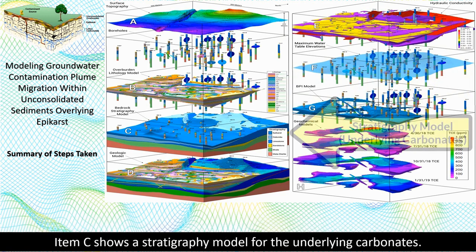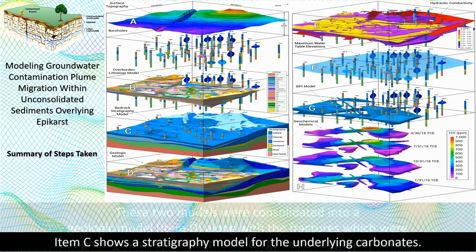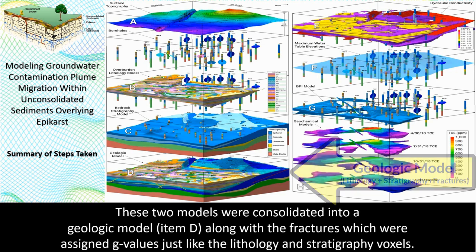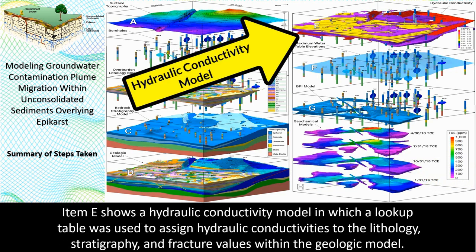Item C shows a stratigraphy model for the underlying carbonates. These two models were consolidated into a geologic model, shown in item D, along with the fractures, which were assigned G-values just like the lithology and stratigraphy voxels. Item E shows a hydraulic conductivity model in which a lookup table was used to assign hydraulic conductivities to the lithology, stratigraphy, and fracture values within the geologic model.